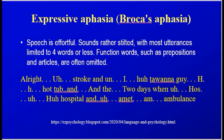We have two kinds of aphasia, named following these brain areas. The first is expressive aphasia, or Broca's aphasia. Damage in Broca's area can result in expressive aphasia. In this condition, speech is effortful, sounds rather stilted, with most utterances limited to four words or less. Function words such as prepositions and articles are muddled or omitted. You can read the transcript of a patient suffering from Broca's aphasia in the slide. You can also visit the link provided to watch the related videos, which were also shown in the classroom.